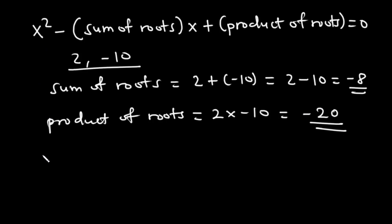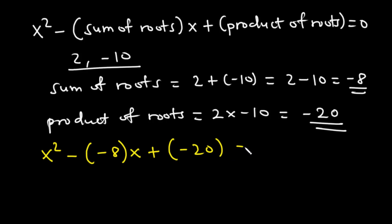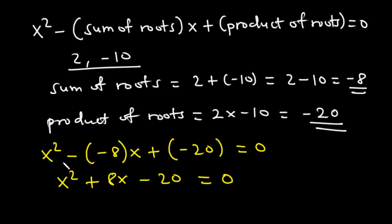So using this formula, we can find the quadratic equation. We have x squared minus the sum of roots, that is negative 8, times x, plus the product of roots, that is negative 20, equals zero. So we have x squared plus 8x minus 20 is equal to zero. The quadratic equation whose roots are 2 and negative 10 is x squared plus 8x minus 20 equals zero.